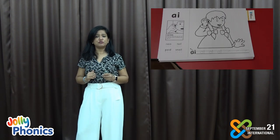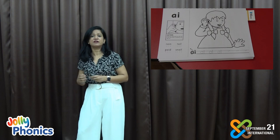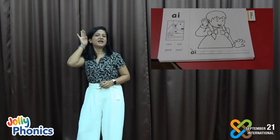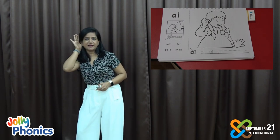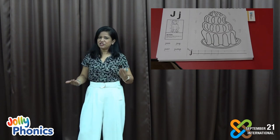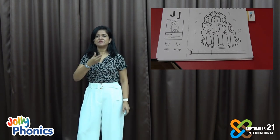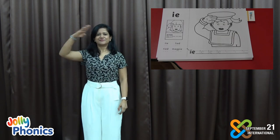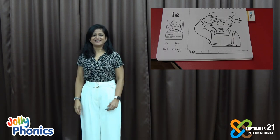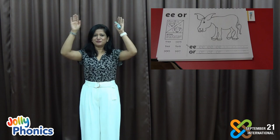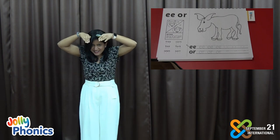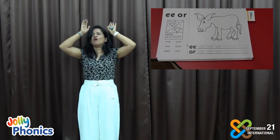Now we are in group number four and here we introduce our children to digraphs — two letters that make one sound. The first sound here is A. Then we have J and O. Now we have two sounds here and the pronunciation is E, O, E, O.